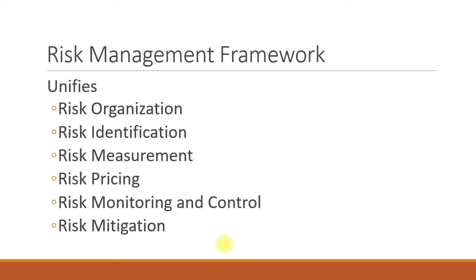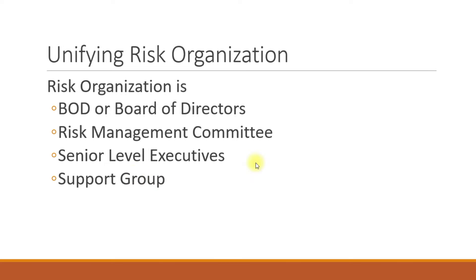The basic risk management framework unifies risk organization. A risk management organization is comprised of a board of directors, a risk management committee, senior level executives, and a support group. The board of directors has overall responsibility for risk management projects, risk policies, procedures, and review mechanisms. They also set limits for various risks identified across the organization.